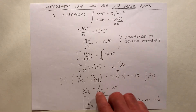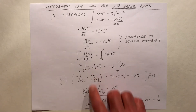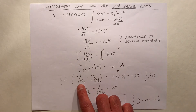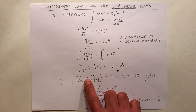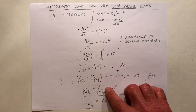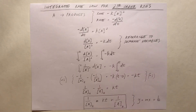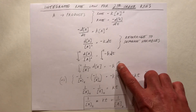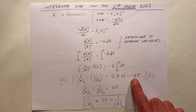The integral of the inverse of concentration squared turns out to be negative 1 over [A] at time T minus a negative of 1 over [A] at time zero. We already factored out the negative K, and the integral from 0 to T of dt is T minus 0, so the right-hand side solves out to be negative KT.